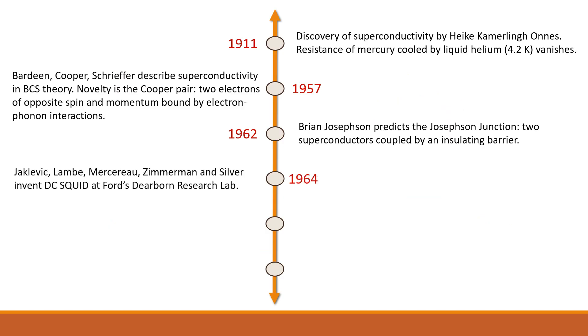In 1964, at Ford's Dearborn Research Lab, they invented the DC squid, but progress did not stop there. In 1986, Muller and Bednorz discovered high temperature superconductors at 30 Kelvin and a ceramic Cooperate. This was monumental because it enabled the use of liquid nitrogen instead of liquid helium, and the breakthrough was such that they were awarded the Nobel Prize just a year later.